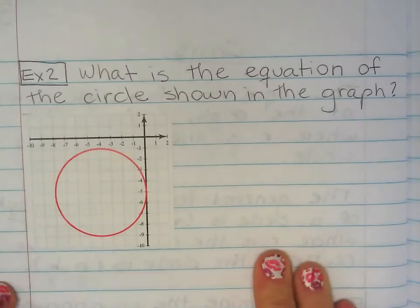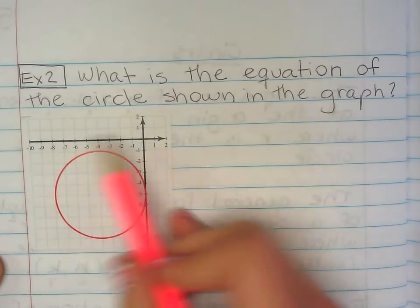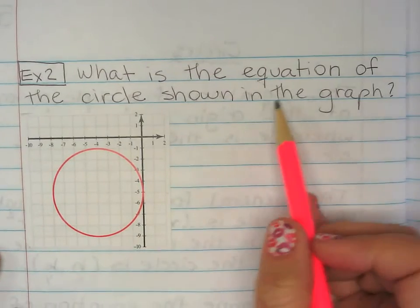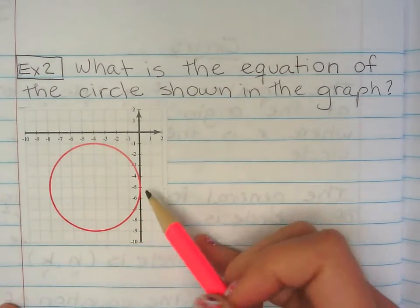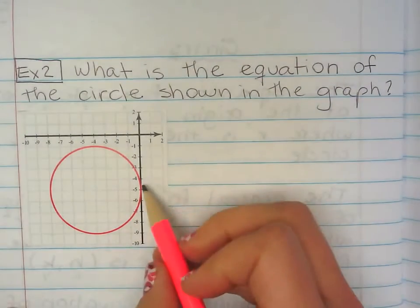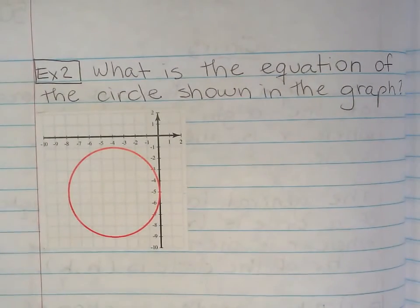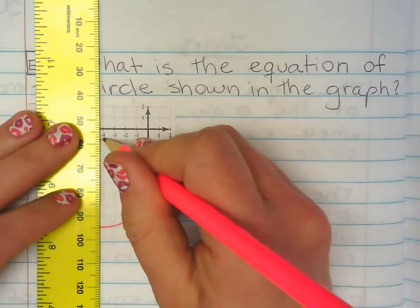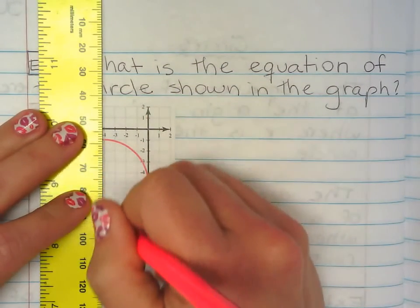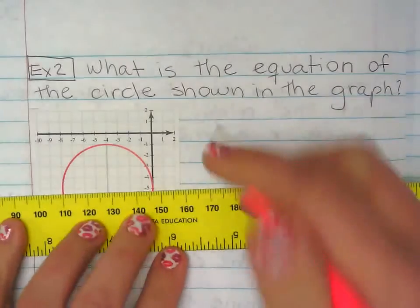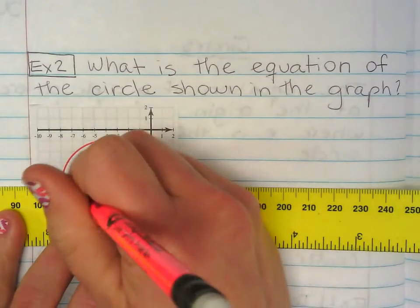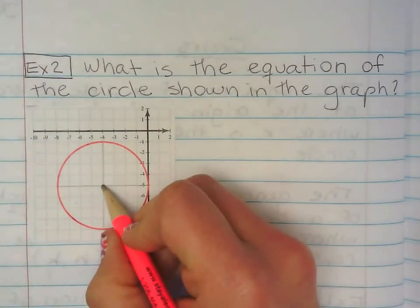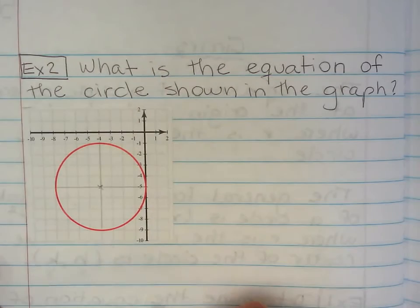The other example. Now, we have the graph. Now, we need to come up with the equation given the graph. So, the first thing we need to know, we need to find where the center of the circle is. So, if I trace a line right here, top to bottom, and side to side, I know the center will be right here in the middle. Right there.